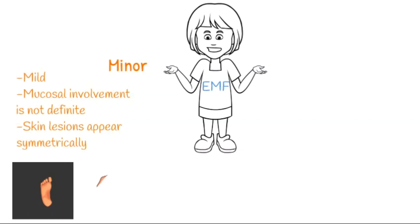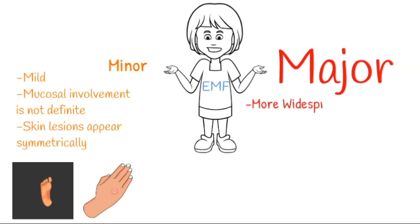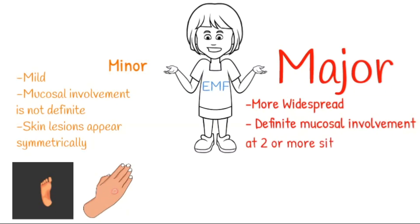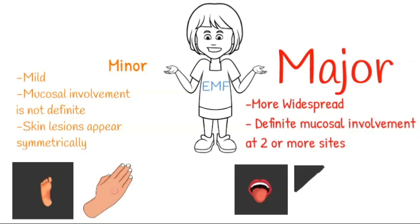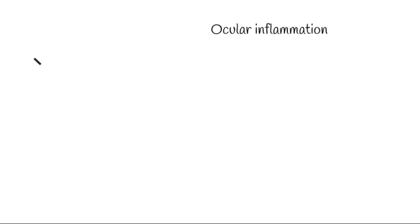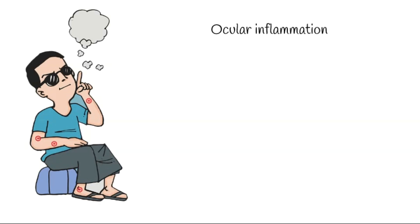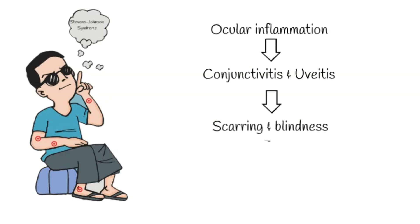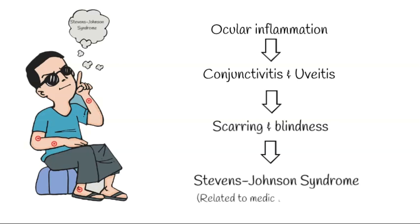In erythema multiforme major, the lesions of the skin are more widespread and there is also definite involvement of two or more mucosal sites, which may include oral mucosa, ocular mucosa, genital mucosa, etc. Ocular inflammation — that is, conjunctivitis and uveitis — may lead to scarring and blindness. This form of erythema multiforme major, sometimes called Stevens-Johnson syndrome, has a strong relation to medications, particularly analgesics.